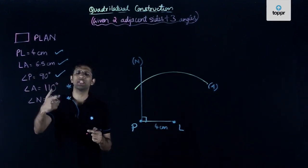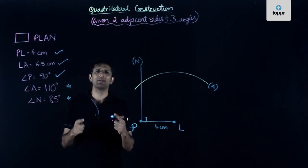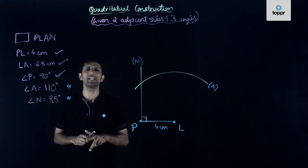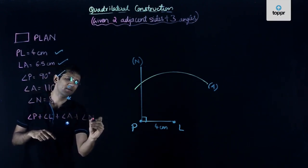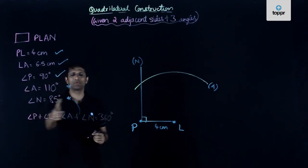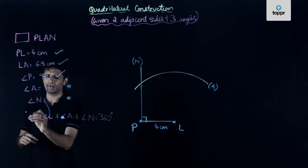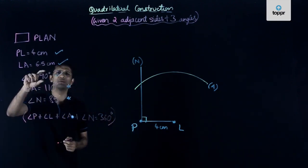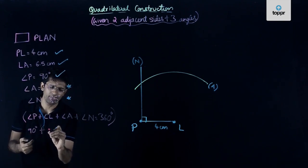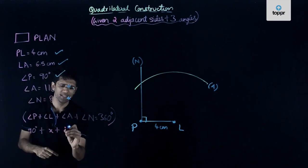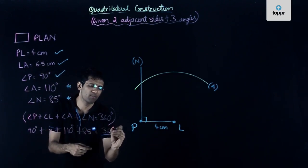To proceed when we cannot directly use these two bits of information, we look at a very useful property of any quadrilateral: the sum of measures of all the angles is always 360 degrees. So in this quadrilateral, measure of angle P plus measure of angle L plus measure of angle A plus angle N equals 360 degrees. We substitute the known values: 90 degrees plus X plus 110 degrees plus 85 degrees equals 360 degrees, where X represents angle L.